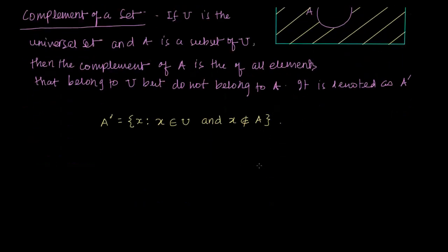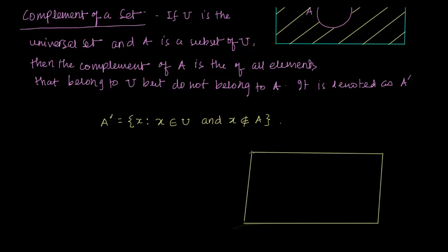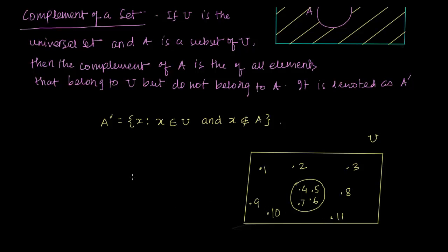Let us say I have a universal set which has elements 1, 2, 3, 4, 5, 6, 7, 8, 9, 10, 11. And set A is 4, 5, 6, 7.